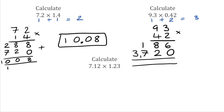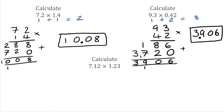Adding these numbers together: 6 add 0 is 6, 8 add 2 is 10 so 0 carry the 1, then 1 add 7 is 8 add the 1 is 9, and 3 on its own. So our answer to that calculation is 3,906. Going back to the original question, we need three decimal places, so the decimal goes here and the answer is 3.906.